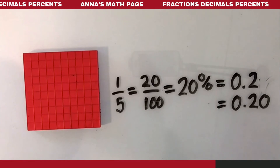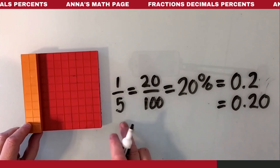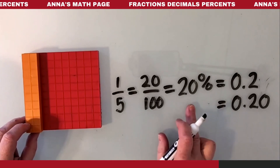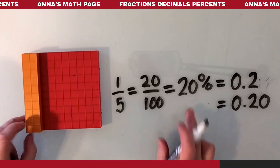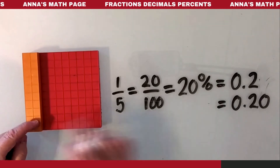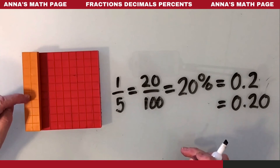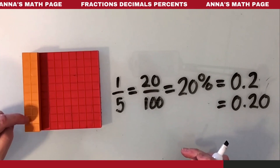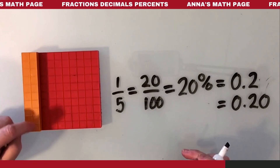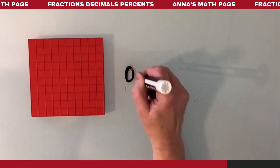Again, you don't actually need to change the color. There's one-fifth, which is the same as 20 out of a hundred, which is the same as 20 hundredths — counting 1 through 20 hundredths.